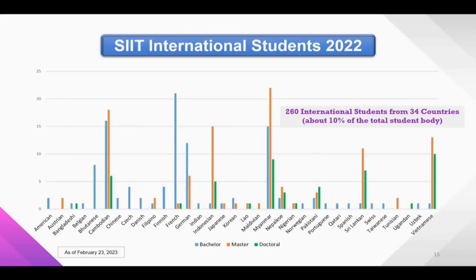The total number of international students is around 260. Some countries have more students than others. We have these students in bachelor's degree, master's degree, and doctoral degree. These data include both exchange students and degree students.